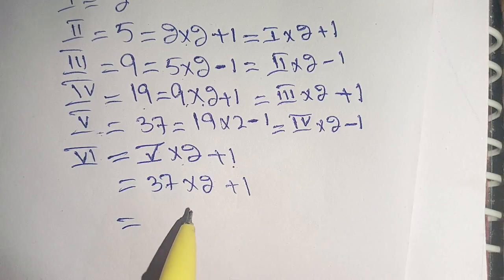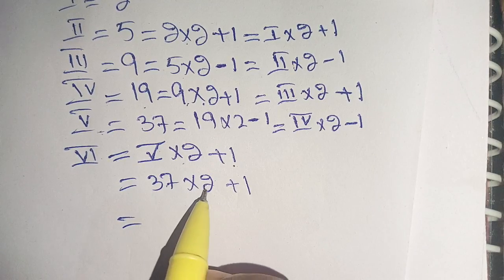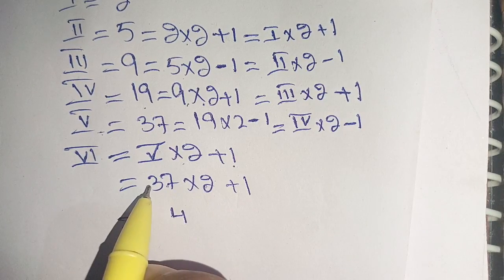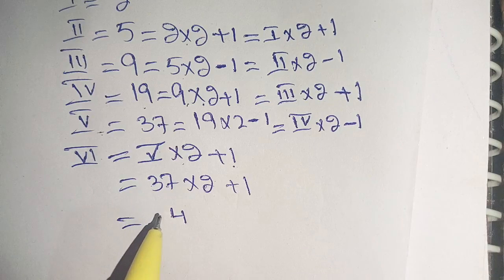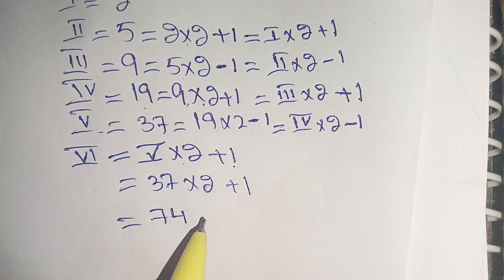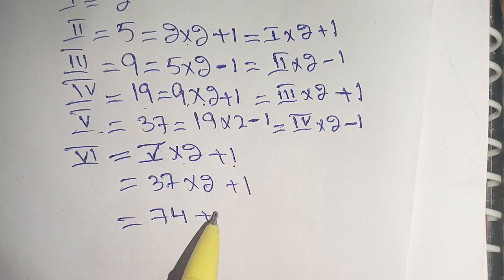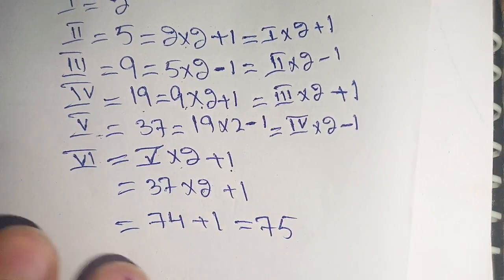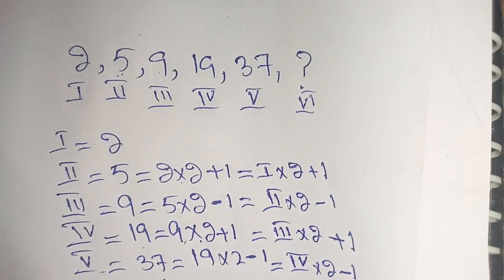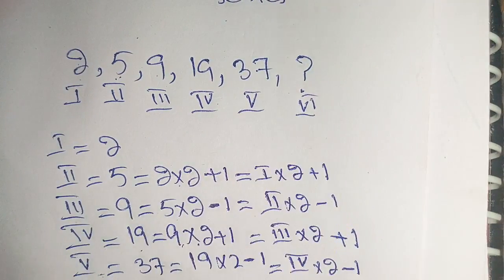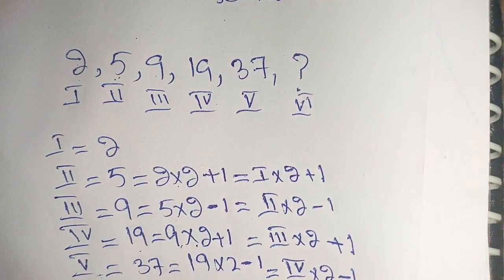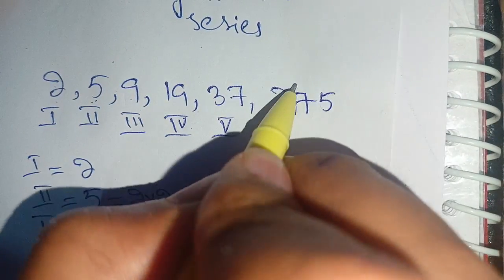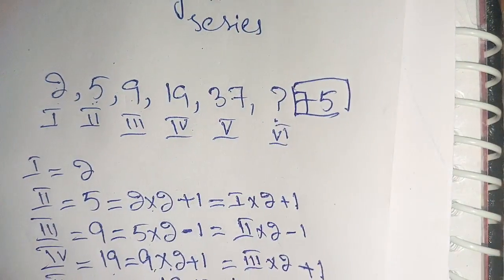37 times 2: 2 times 7 equals 14, carry the 1; 2 times 3 equals 6, plus 1 equals 7 — so 37 times 2 equals 74. Then 74 plus 1 equals 75. Thus our sixth term is equal to 75, which replaces our question mark.